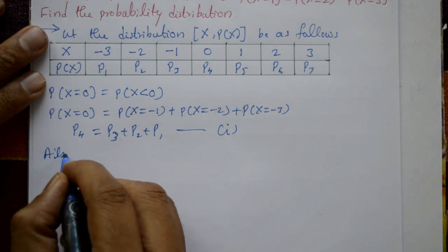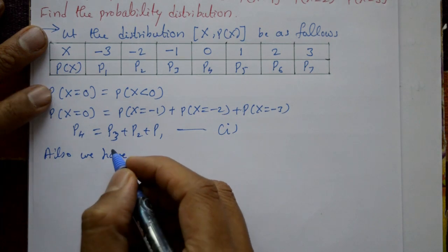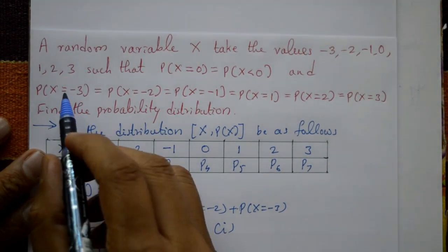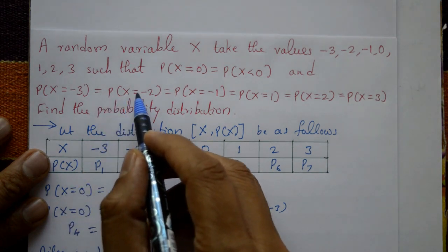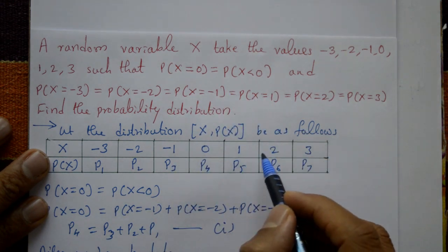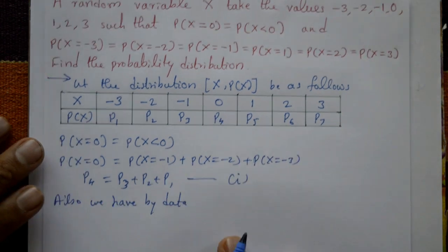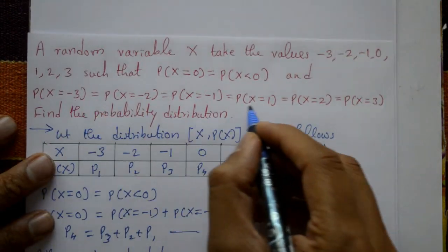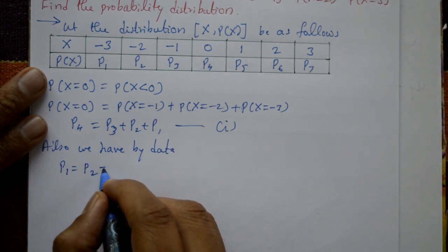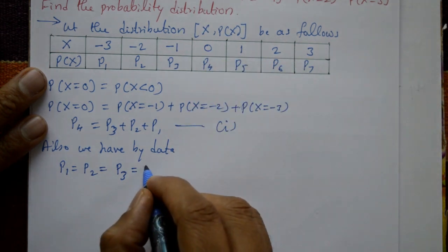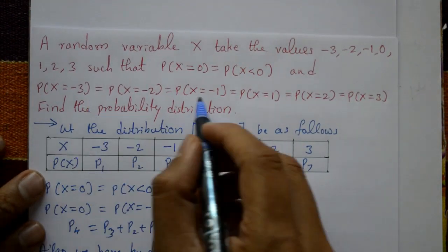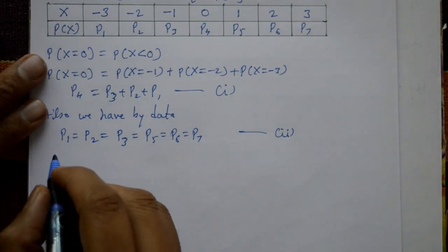Also, from the given data, probability X equals minus 3 equals probability X equals minus 2 equals probability X equals minus 1 equals probability X equals 1 equals probability X equals 2 equals probability X equals 3, meaning all p values except p4 are equal. So p1 equals p2 equals p3 equals p5 equals p6 equals p7. This is equation number 2.